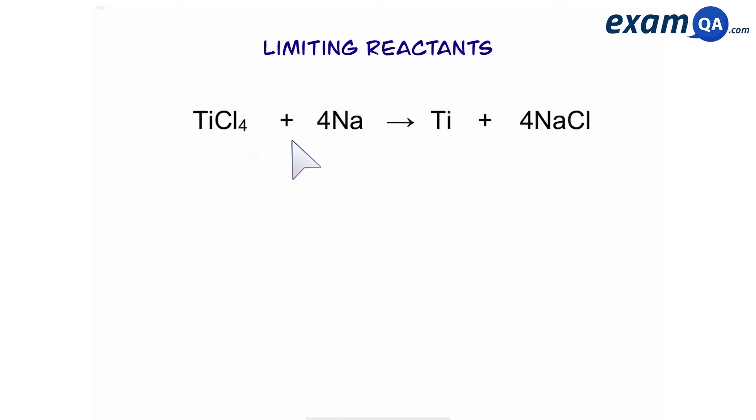So titanium chloride reacts with 4 sodiums to make titanium and 4 sodium chloride. So I've got 3 titanium chlorides and 8 sodiums. So remember there's a 1 in front of this, so we leave it the same. And there's a 4 in front of the sodium, so we divide it by 4. Now we look for the limiting reactant, which is 2. We're going to times this by the number in front of our products. There's a 1 in front of titanium, so that stays as 2. And there's a 4 in front of sodium chloride, so times it by 4. So the final answer is that we get 2 titaniums and 8 sodium chlorides.